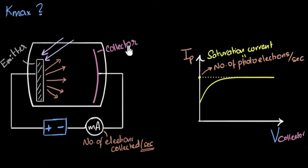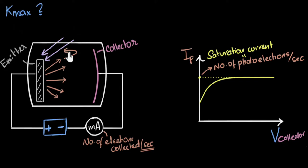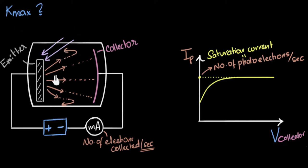Now let's think about what's going to happen to our current. When there was no battery, there was some current because some photoelectrons were reaching the collector. But now since I've given a negative voltage to the collector, some of those electrons will stop reaching — they'll get repelled and turn back. But electrons with very high energy will slow down but not stop, and still get collected. So you'll still get a current, but it will be smaller. At one volt negative, if current is still there, one volt is not enough to stop the electrons, so I increase it.